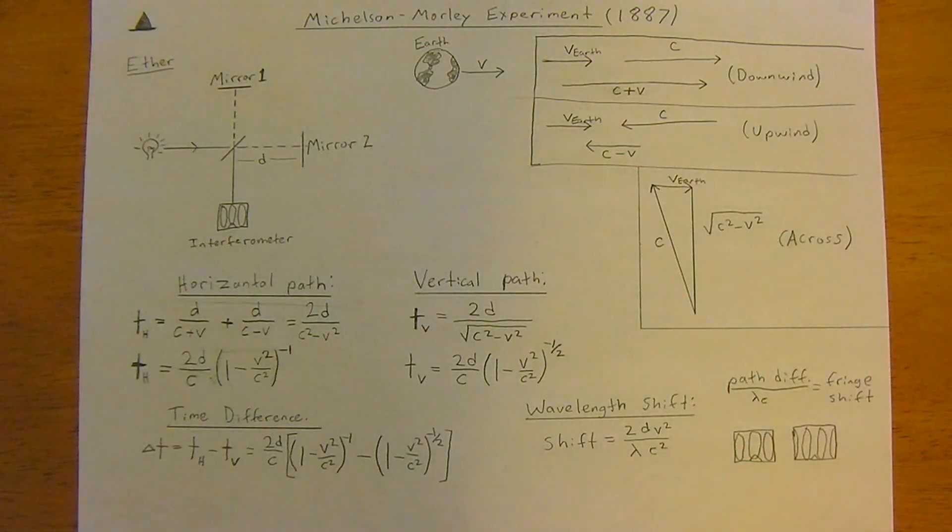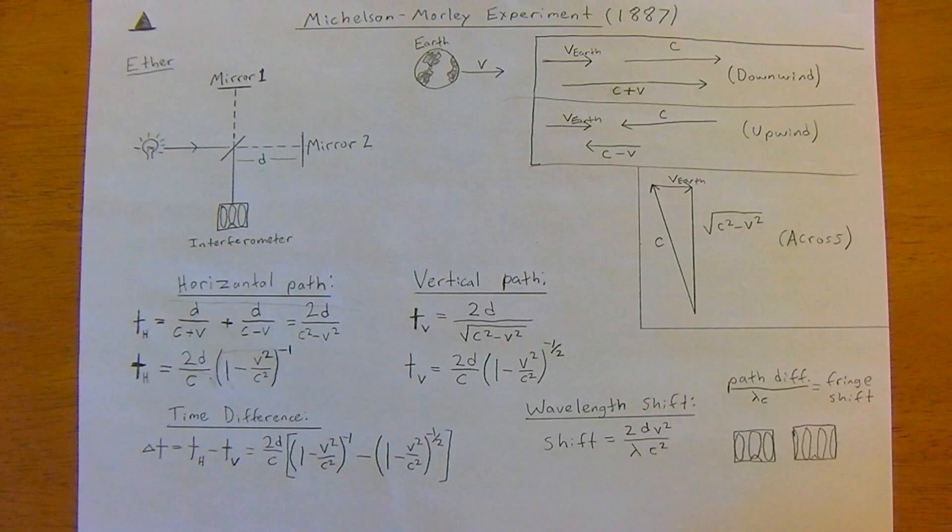In 1887 there was the famous Michelson-Morley experiment. This was set up because at the time everybody thought that there was such a thing as an ether, and this was made to actually test that hypothesis and determine if it was accurate. They actually got a false outcome, so this experiment did not prove what they wanted it to prove.